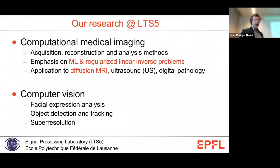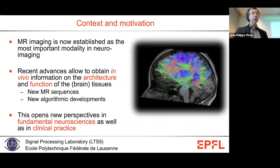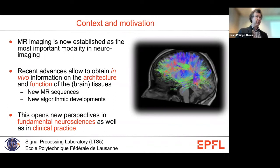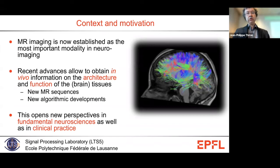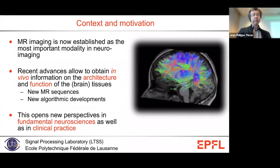We also have another part of the lab doing more classical computer vision research on facial expression, object detection and tracking, and other domains. But what I would like to discuss today is really MRI, which as you know, magnetic resonance imaging is now very well established as the most important modality when you want to study complex organs like the brain, because of the fantastic contrast that you can get and some additional information from special types of MR sequences.